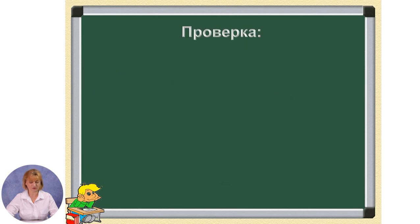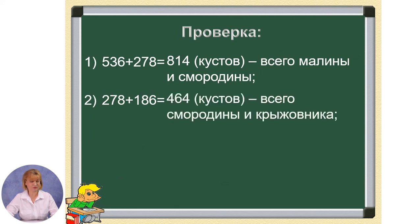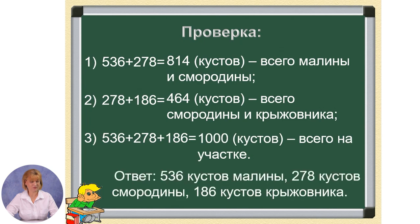Выполним проверку. Проверим первую сумму: 536 плюс 278 равно 814 кустов всего малины и смородины. Проверим вторую сумму: 278 плюс 186 равно 464 кустов всего смородины и крыжовника. Проверим третью сумму: 536 плюс 278 плюс 186 равно 1000 кустов всего на участке. Ответ: 536 кустов малины, 278 кустов смородины, 186 кустов крыжовника.